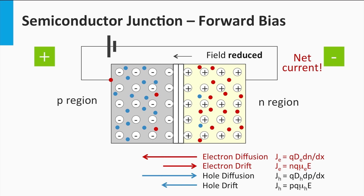As a consequence, the width of the depletion zone is affected — the width becomes much narrower. This means that the diffusion becomes more dominant than drift. You can easily see this if you look in more detail at the equations for the current densities related to diffusion and drift.